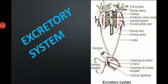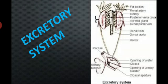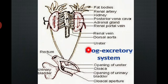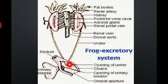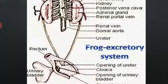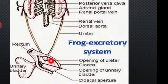Good morning students, we are going to learn the excretory system in frog. The excretory system of a frog is a well-developed system. It consists of a pair of kidneys and ureters, urinary bladder — this is the opening of the ureter and opening of the urinary bladder — and the rectum region and cloaca downward.